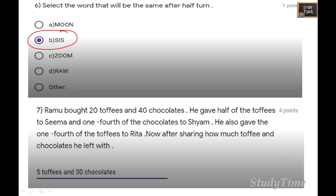Ramu bought 20 toffees and 40 chocolates. He gave half of the toffees to Seema, so that's 10 toffees. One-fourth of the chocolates to Shyam, that's 10 chocolates. He also gave one-fourth of the toffees to Rita, that's 5. Now after sharing, how much is left? He gave 15 toffees, so remaining is 5 toffees and 30 chocolates.